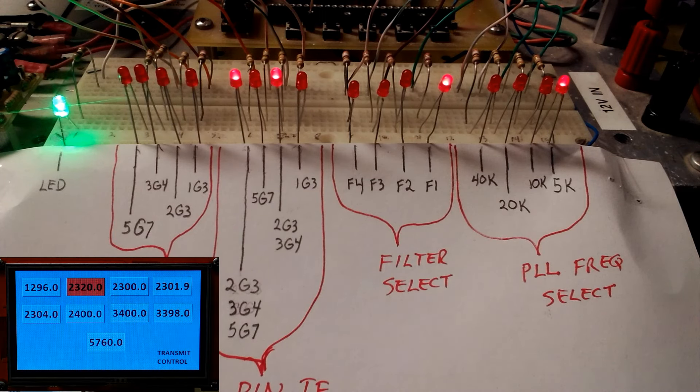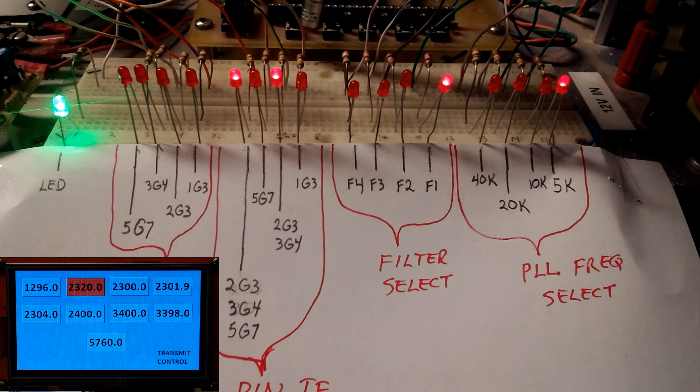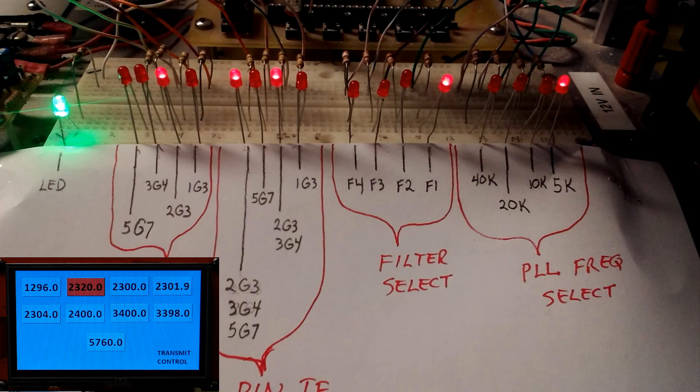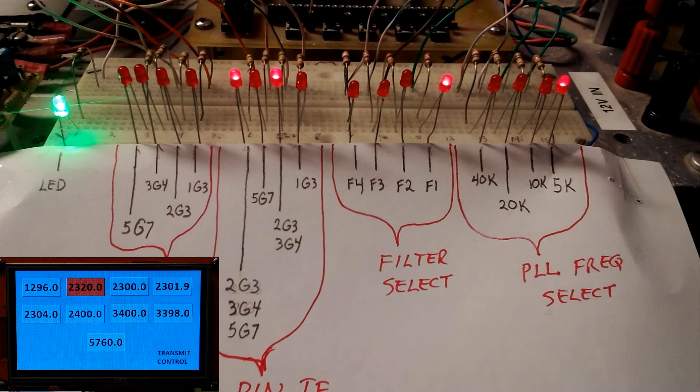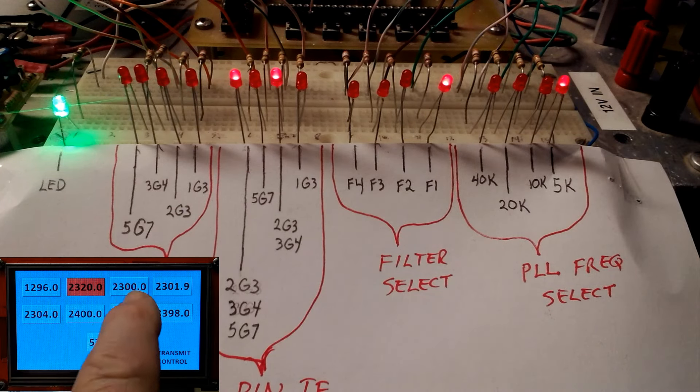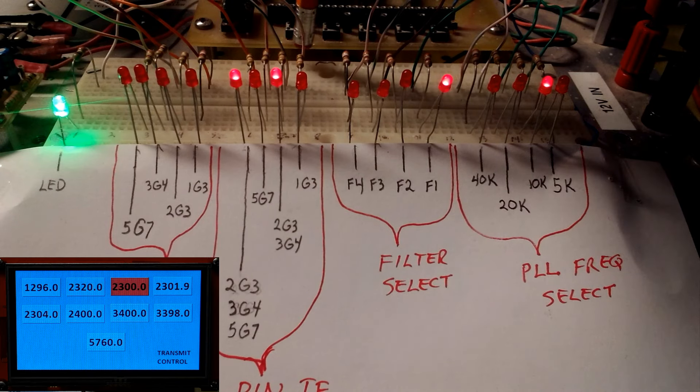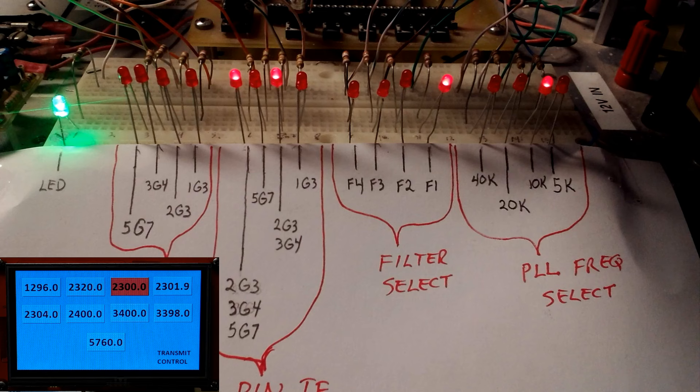Next band or frequency, and the outputs change again according to the truth table. Should be on the money this time Howard. And again, the push to talk being activated, you'll see the output LED accordingly go on and off with it. Next band being selected, not a real big change on the LEDs. I think it was just a PLL frequency select output change this time. And again, the push to talk input is activating the corresponding output LED.